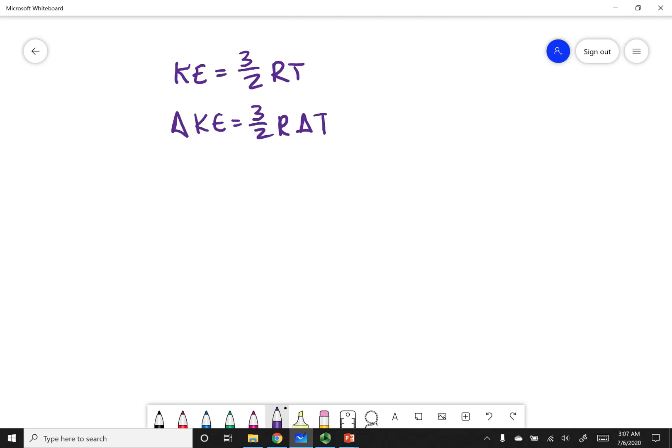So my delta T, or my change in temperature, is going to be just one. And so this corresponds to 3 halves R on this side. Now what I want to do is I want to talk about the conditions of my process.